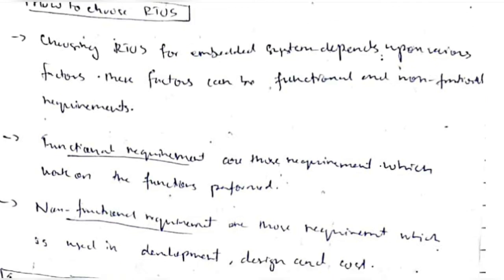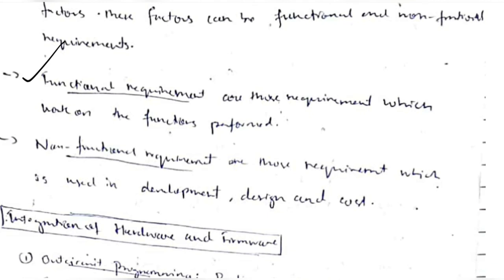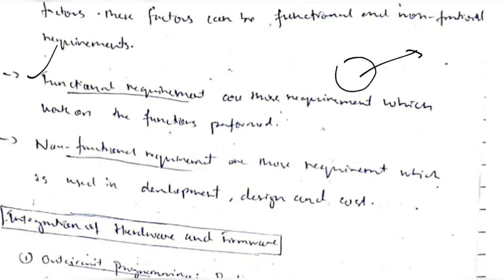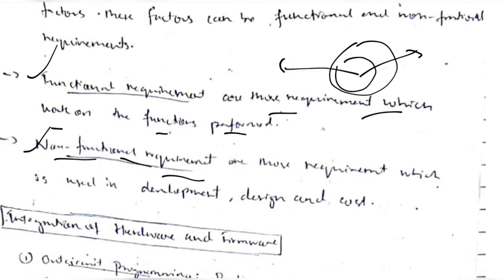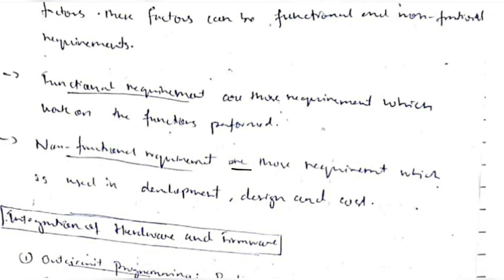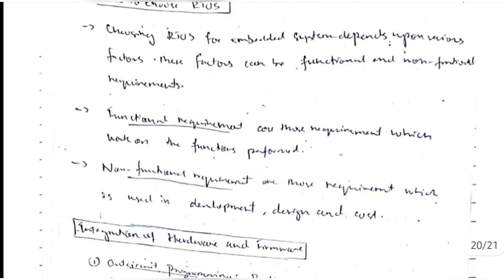Choosing an RTOS depends on two types of requirements. Functional requirements define what the application does — the functions it performs. Non-functional requirements cover scope, speed, efficiency, design, development, and cost. Looking at both factors together helps decide what type of RTOS is best for the system.